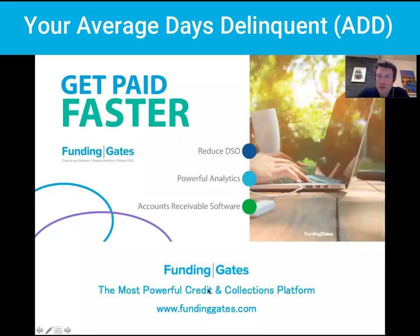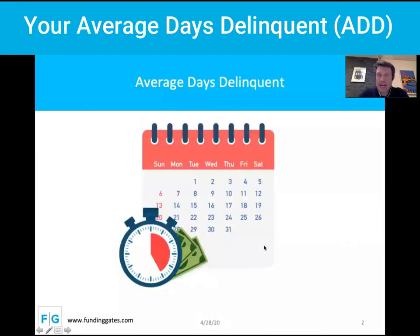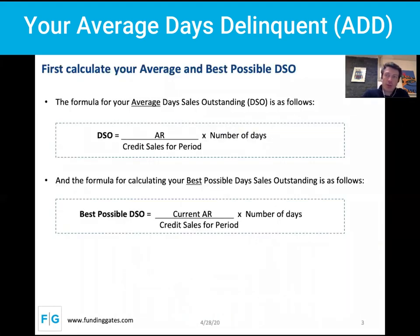Hello everyone, this is Jean-Marc calling from Funding Gates. Today we're going to be talking about your Average Days Delinquent. In order to calculate it, there are two things you need to calculate first. The first is your Average Days Sales Outstanding (DSO), which is your receivables volume divided by your credit sales for the period, times the number of days.